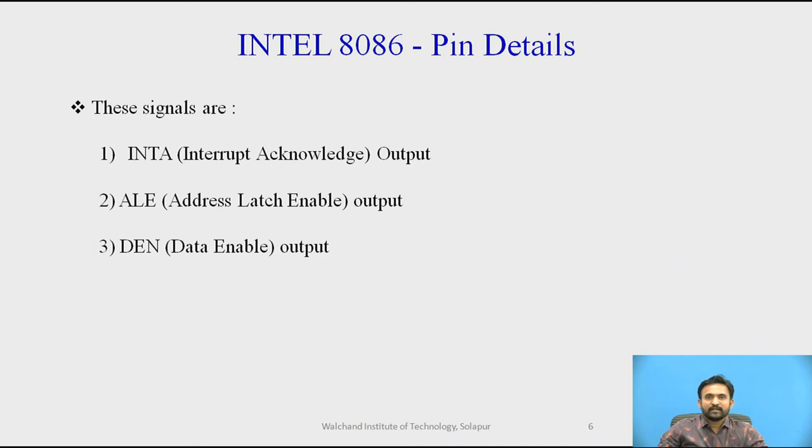Now Intel 8086 pin details regarding minimum mode operations - what are the number of pins available for controlling the minimum mode configuration. 8086 generates all bus control signals in the minimum mode configuration. These signals are: first, INTA (interrupt acknowledge) - its output signal indicates recognition of an interrupt request. Second, ALE (address latch enable) output - this signal is provided by 8086 to demultiplex the AD0-AD15 into A0-A15 and D0-D15 using external latches.